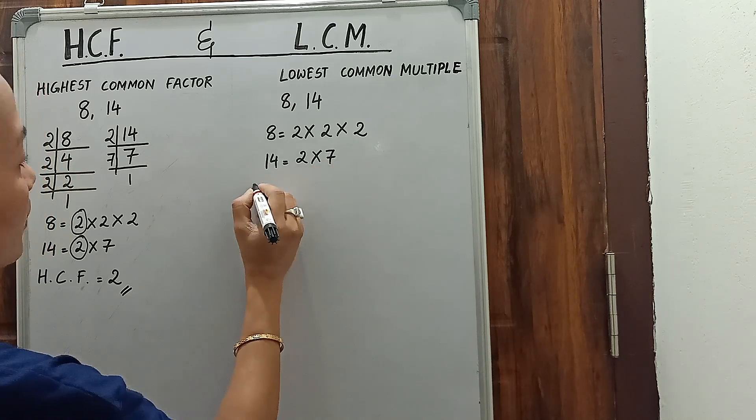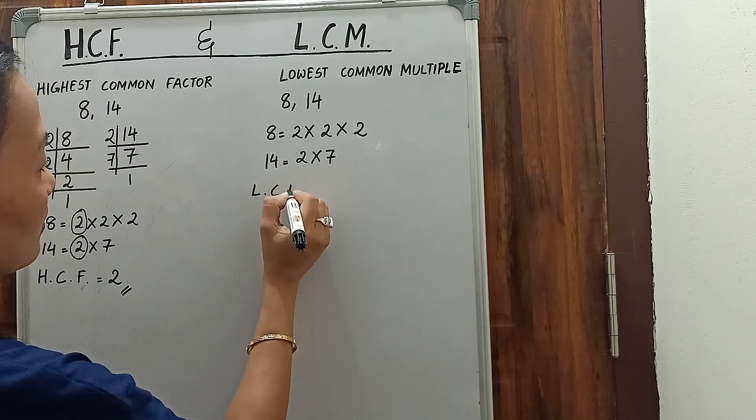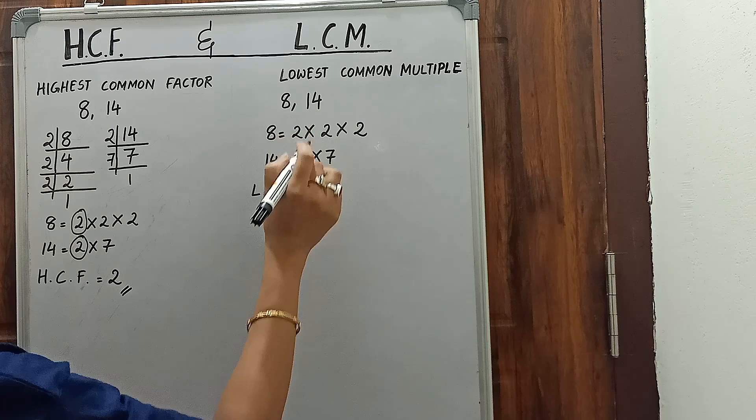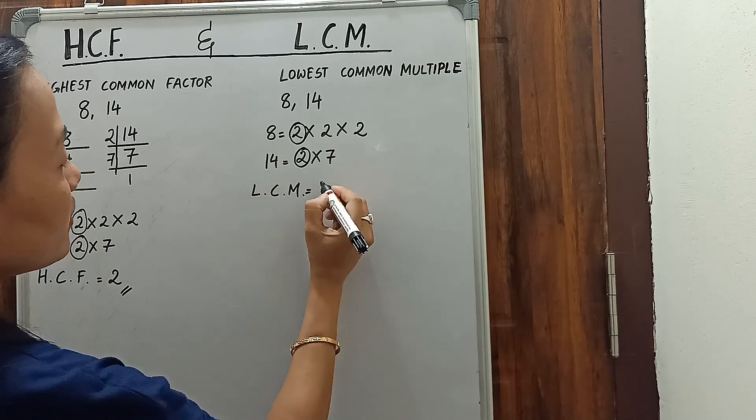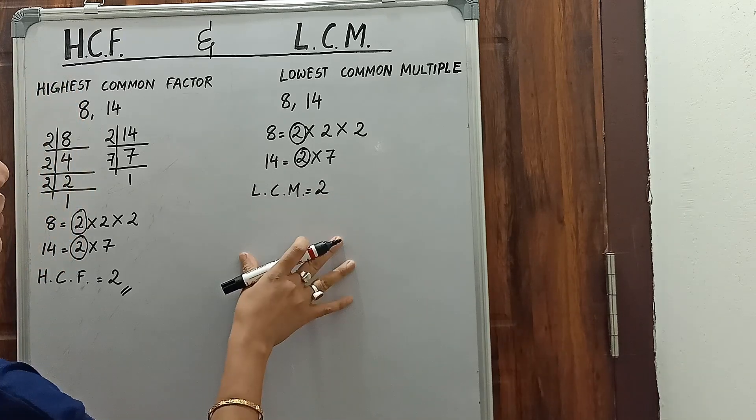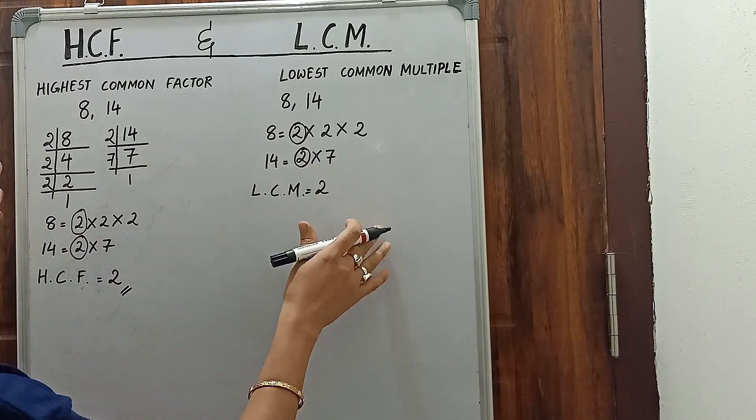Here what you need to do is, first of all we will write the common numbers among these: 2. And here what you have to do is we have to write all the other numbers also.